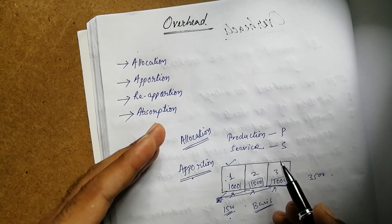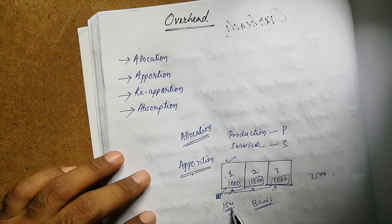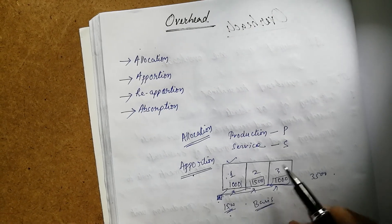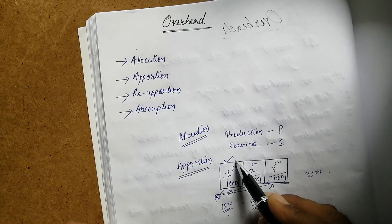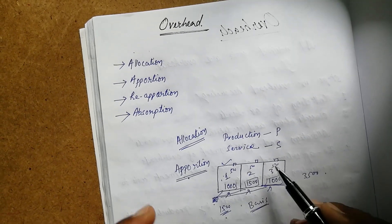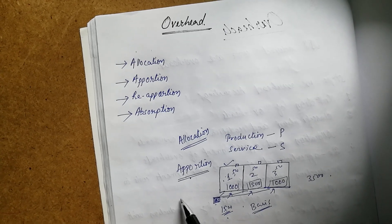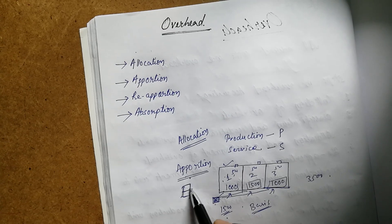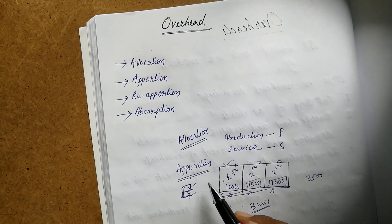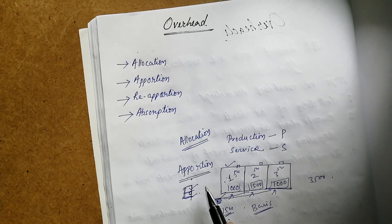Now, apportion means the common expenses. The common expenses will be distributed among them on a suitable basis. For example, electricity—we don't know shop-wise how much electricity each shop is using. There's no problem with allocation, but for common expenses we will be needing some basis on which we will distribute that expense.